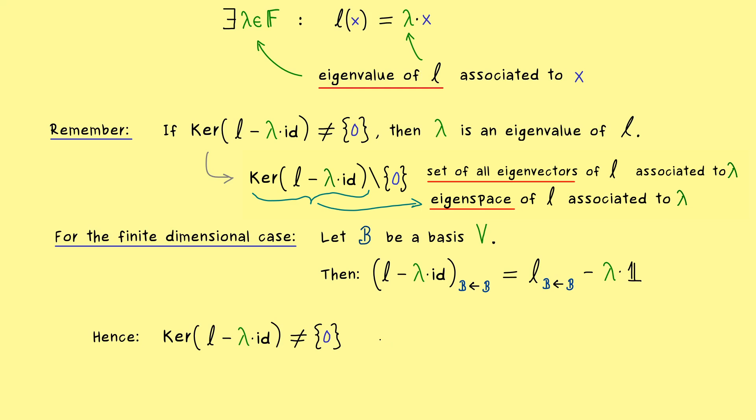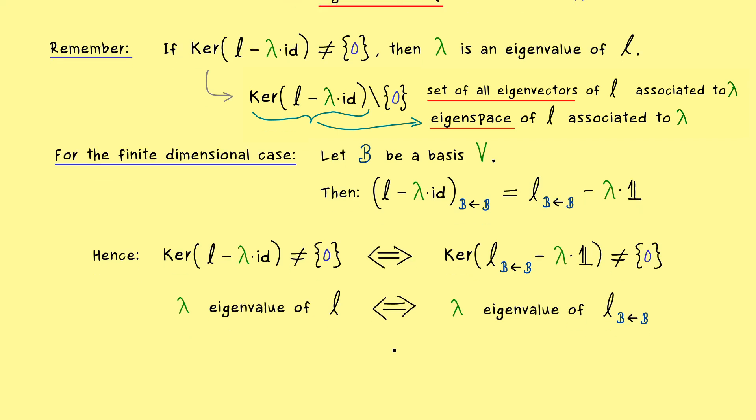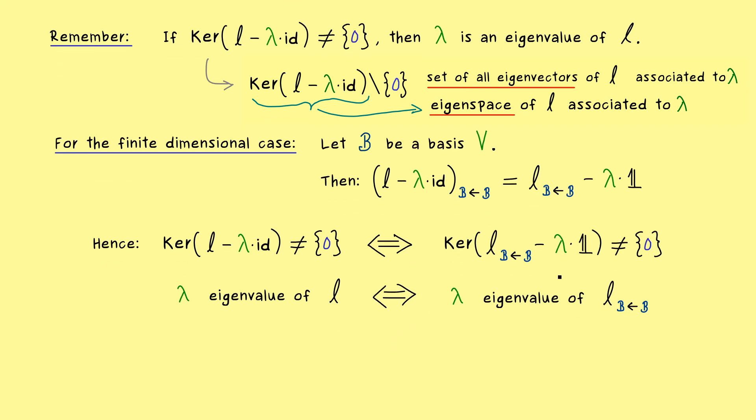The one kernel is non-trivial if and only if the other one is as well. However here on the right hand side we know that this is the description of eigenvalues for matrices. This means if we go to the matrix representation we don't change the eigenvalues at all. This is important to remember because we already know how to calculate eigenvalues for matrices. We just have to solve the corresponding characteristic polynomial which is given by a determinant.